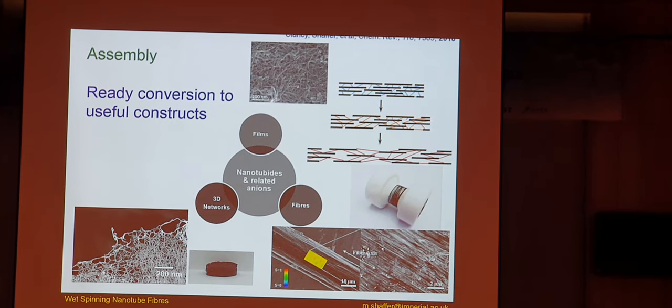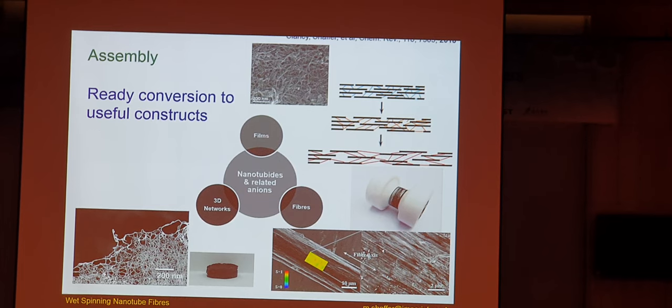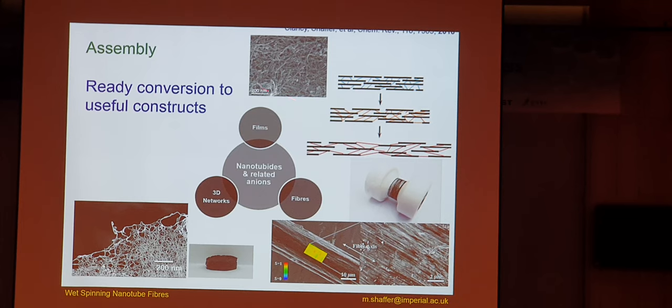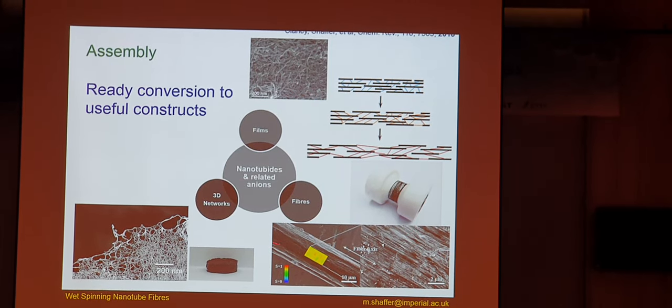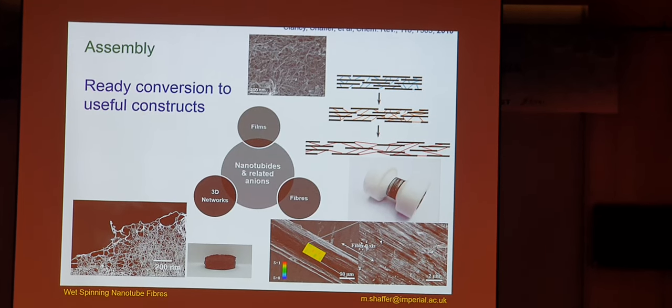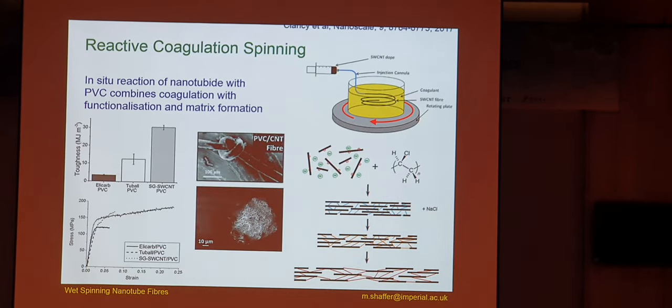If you want to do assembly, you can take a nanotubite and convert it into different structures. You can gel it to make an aerogel, you can deposit it as a film, or of course you can make fibers. So today we'll just talk about the fabrication of fibers, but there's a little bit more lurking in there.